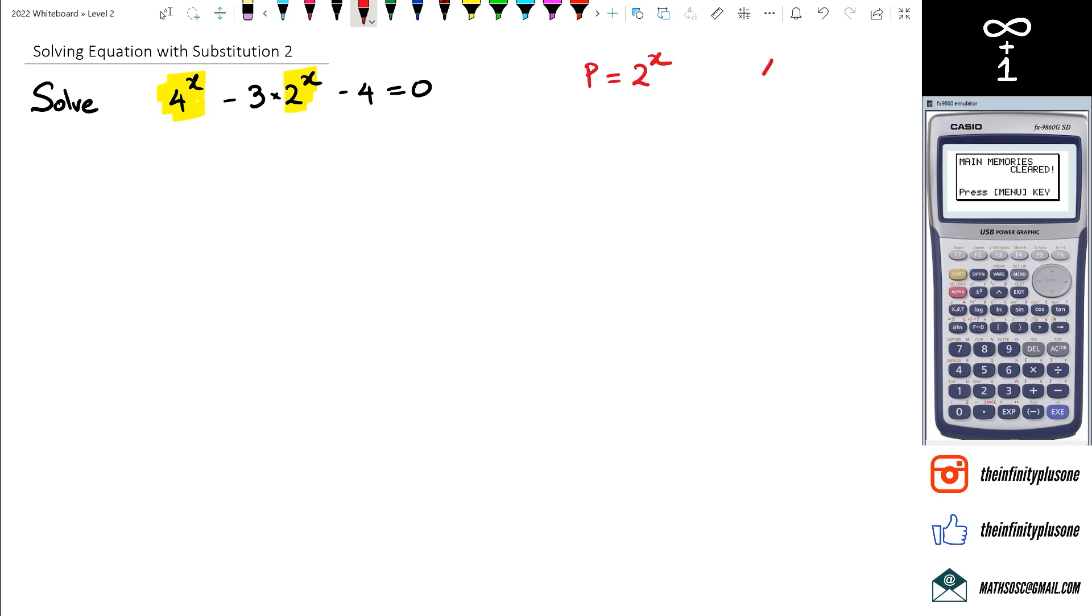So when you actually have 4^x, 4^x could be written as 2^2. So I'm going to rewrite this as (2^2)^x. And here's where the little switcheroo happens, but I'm going to do one extra step.